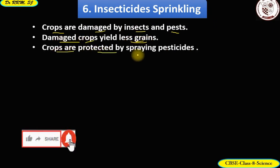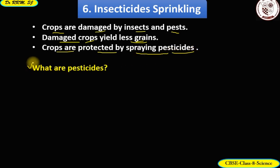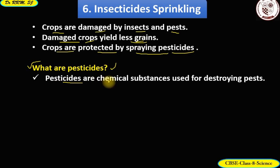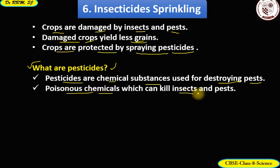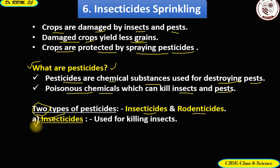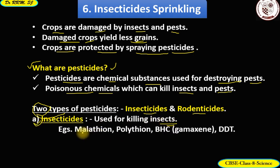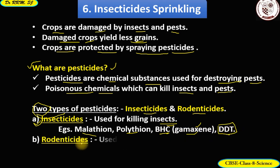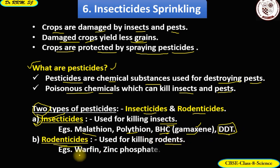Crops are protected by spraying pesticides. Pesticides are chemical substances used for destroying pests — poisonous chemicals which can kill insects and pests. Pesticides are of two types: insecticides and rodenticides. Insecticides are used for killing insects; examples include malathion, polythion, and BHC (benzene hexachloride), commonly known as gamexin. DDT is also quite effective. Rodenticides are used for killing rodents; examples include warfarin and zinc phosphate.